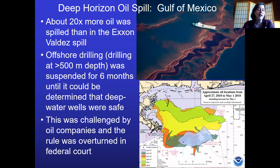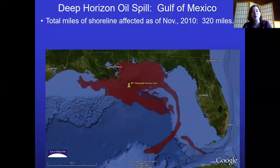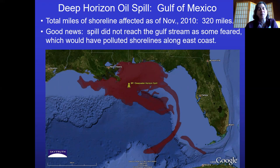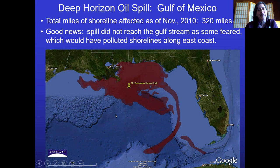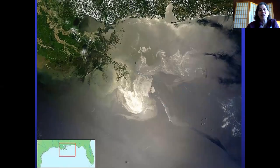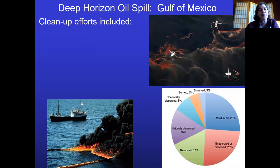Shrimp fishermen and other fishermen were redeployed with skimmers to try to clean oil off the surface. The spill led to lawsuits, and BP spent a lot of money trying to help affected people. The total affected shoreline was 320 miles. The good news: the Gulf Stream current runs off the coast of Florida and up toward Europe, and we were very lucky the oil for the most part did not make it into the Gulf Stream — otherwise it would have spread all the way up the US coast and over to England.